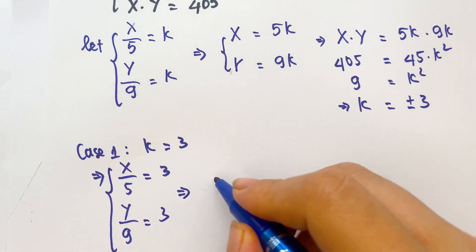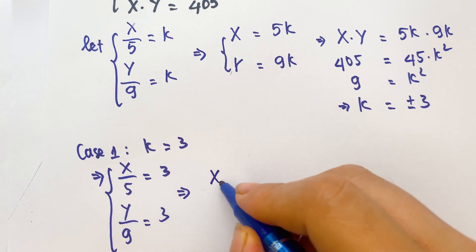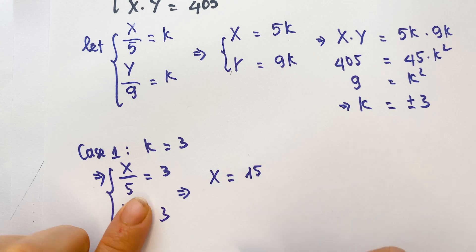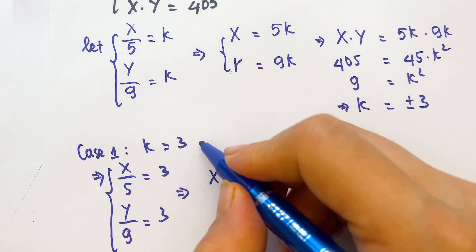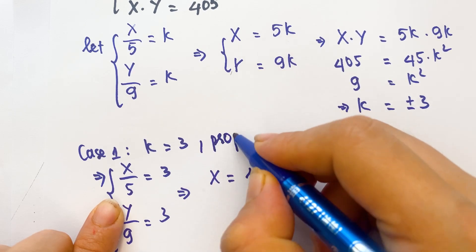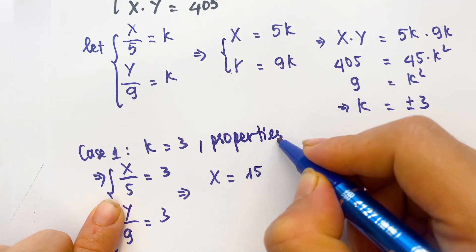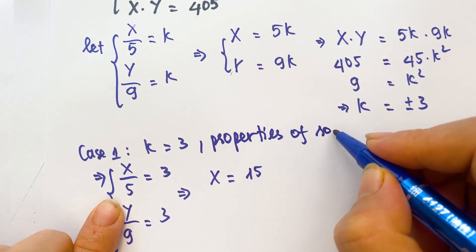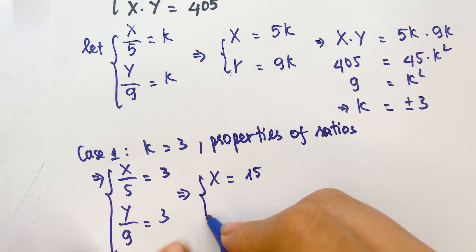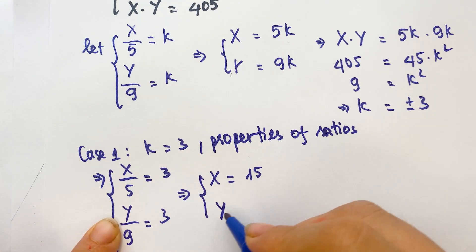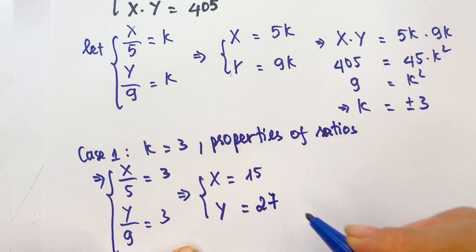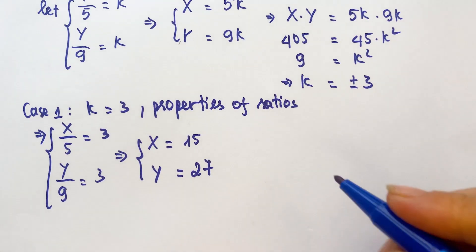And then we have value of x and y. x equals 15. In here, you need to apply the properties of ratios. And then you have y equals 3 times 9 equals 27.